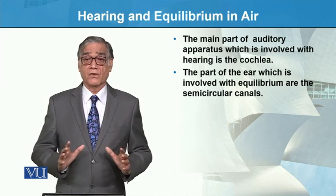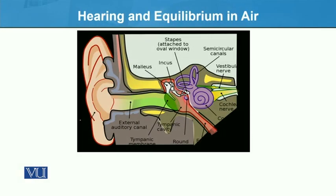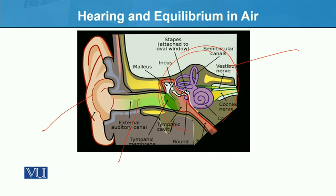Looking at the anatomy diagram, this is the middle ear and this is the internal ear, which is the hearing organ. Here is where sound waves strike, and then these three bones transmit the vibrations onward. This is a very complicated phenomenon.